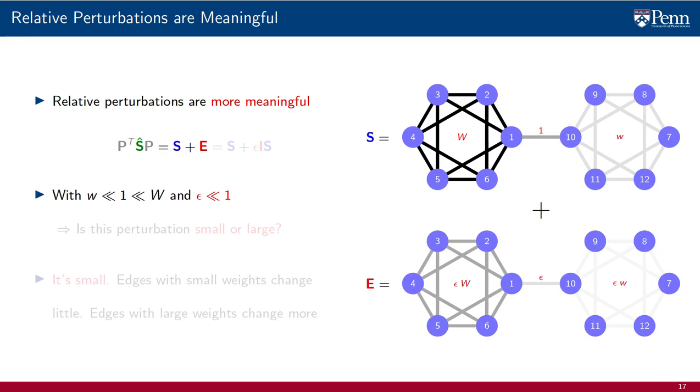If the weights are as before, and we add the hypothesis that epsilon is much smaller than 1, is this a small perturbation or a large perturbation?